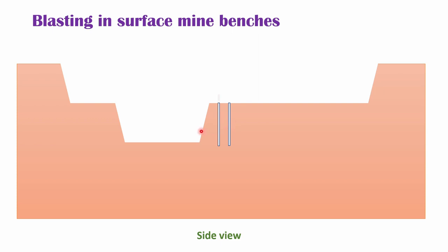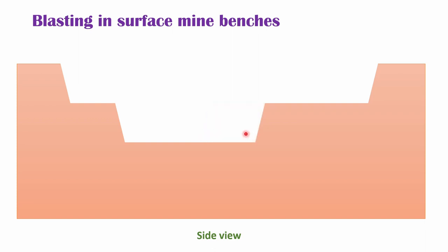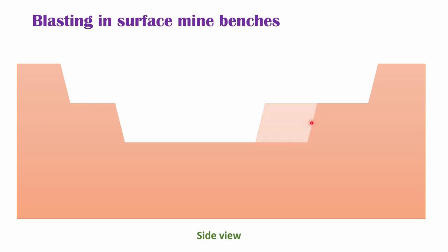In the blast hole, we will provide the explosive charge. Then we will continue blasting and this much rock will be extracted and the face will move forward. For moving further in this direction, we have to drill blast holes again, provide the explosive, do the blasting, and extract the rock mass. And the surface mine benches are formed.